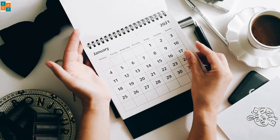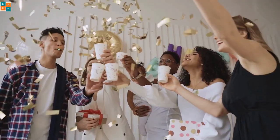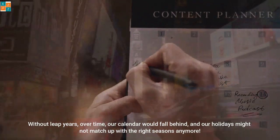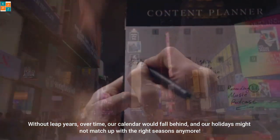This way, we keep our calendar aligned with the Earth's orbit, making sure that our seasons and celebrations stay in the right place. Without leap years, over time, our calendar would fall behind, and our holidays might not match up with the right seasons anymore.